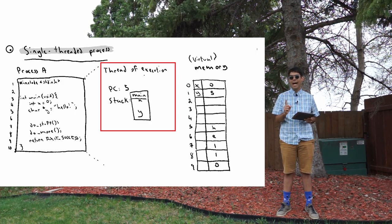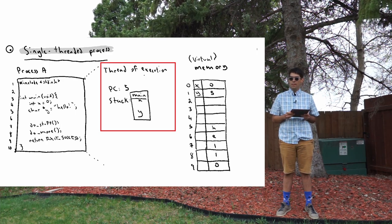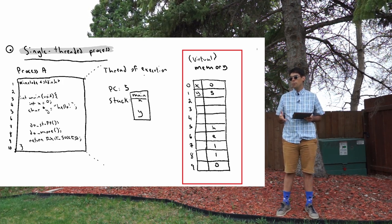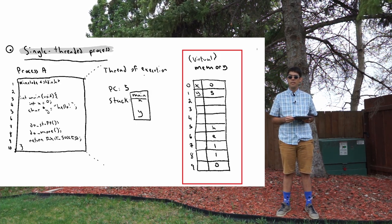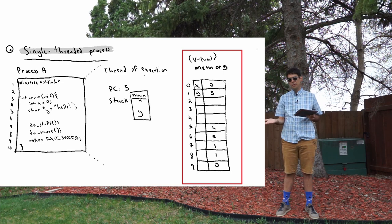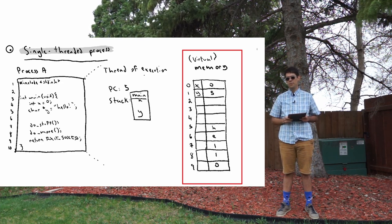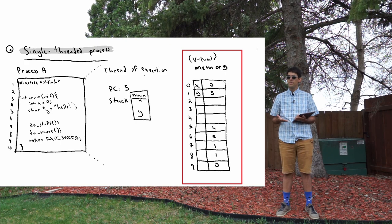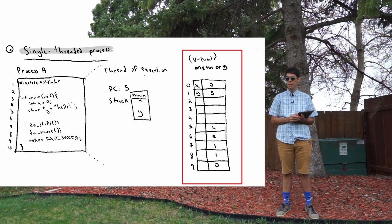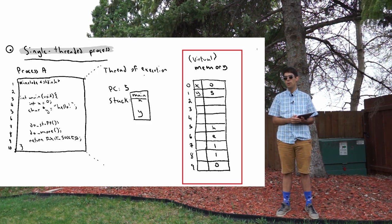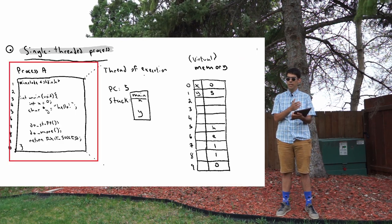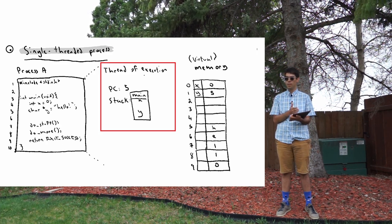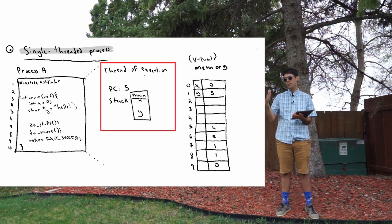That single thread also has exactly one stack. It has access to the entirety of virtual memory — this giant array that starts at zero and goes up to however many gigabytes of RAM you have. As far as the process is concerned, it is entirely alone and has access to all of that memory by itself. One thread of execution has one program counter, one stack, and access to all of memory.